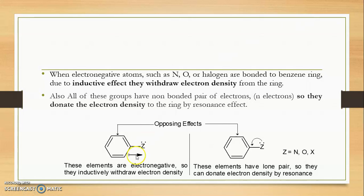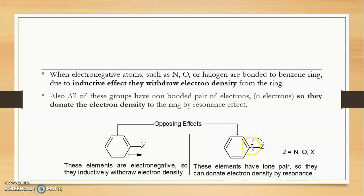As shown in the diagram, these elements are electronegative, so they inductively withdraw the electron density from the benzene ring, reducing the net electrons present on the ring. However, due to the resonance effect, because these elements have a lone pair of electrons, that lone pair is donated to the benzene ring, increasing the electron density.